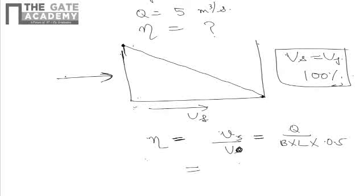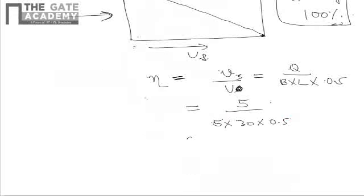Upon substitution of values, that is 5 upon 5 meter width times 30 meter length multiply by 0.5. So the answer for η comes out as 6 percent only. So correct answer for question number 35 is C.